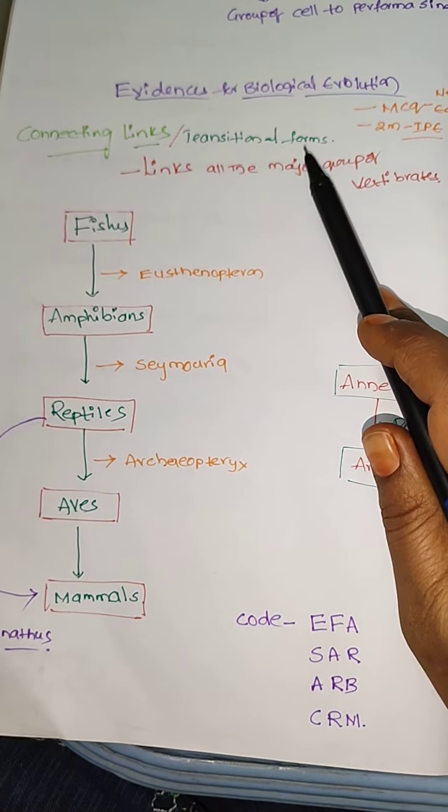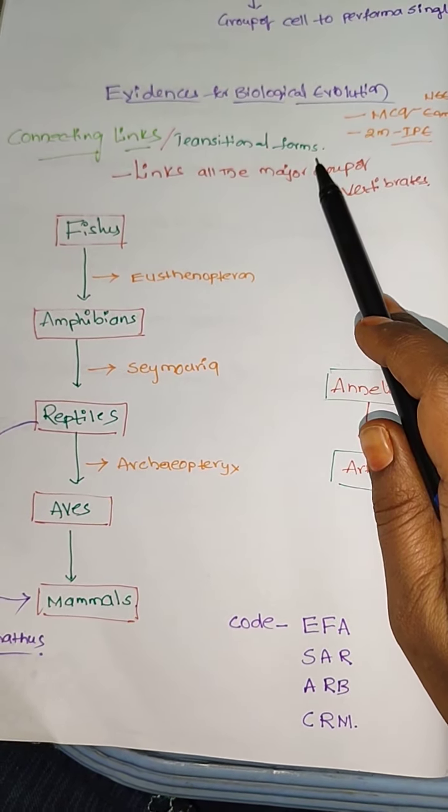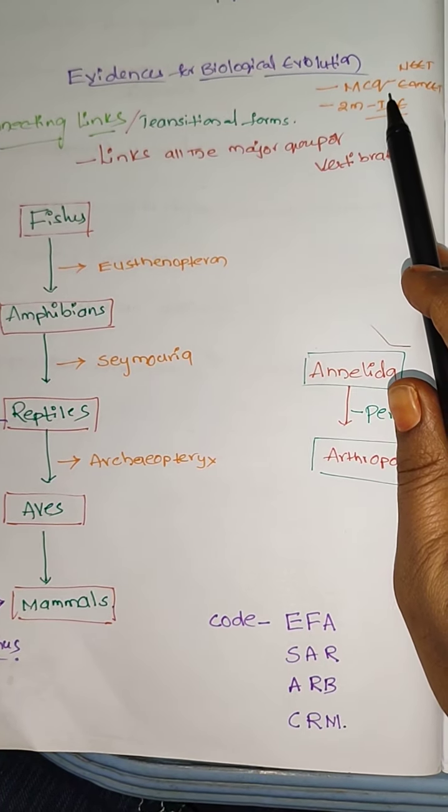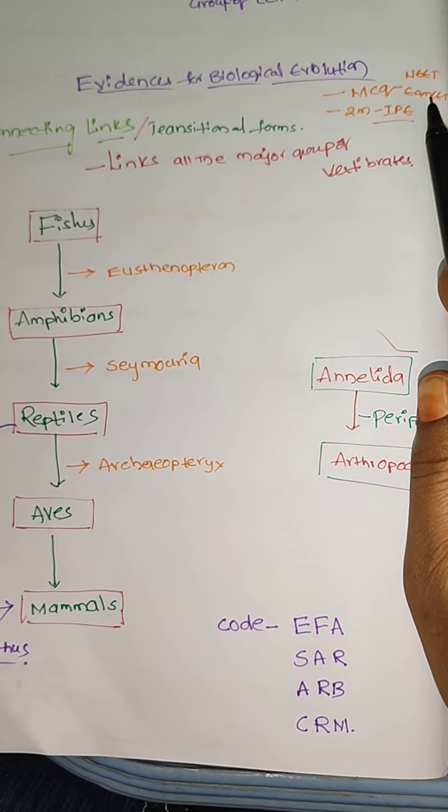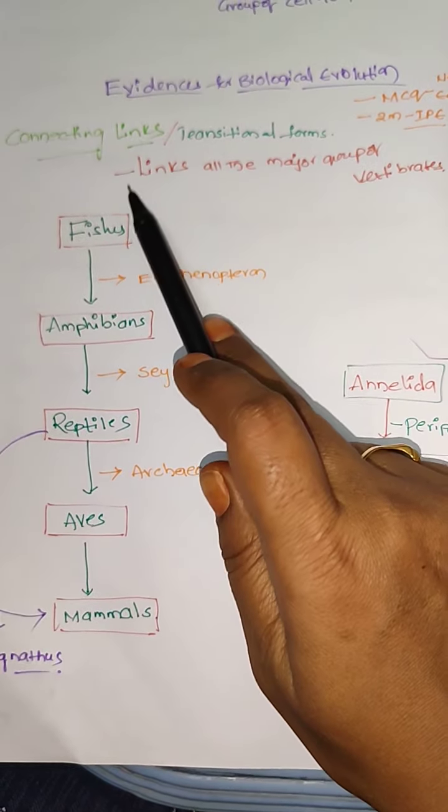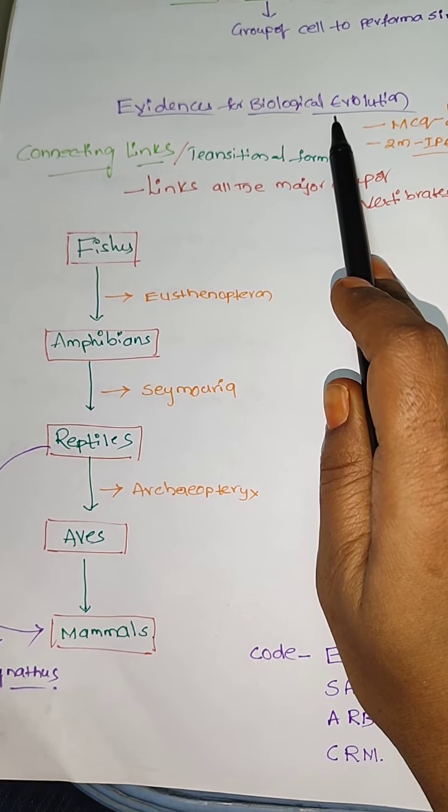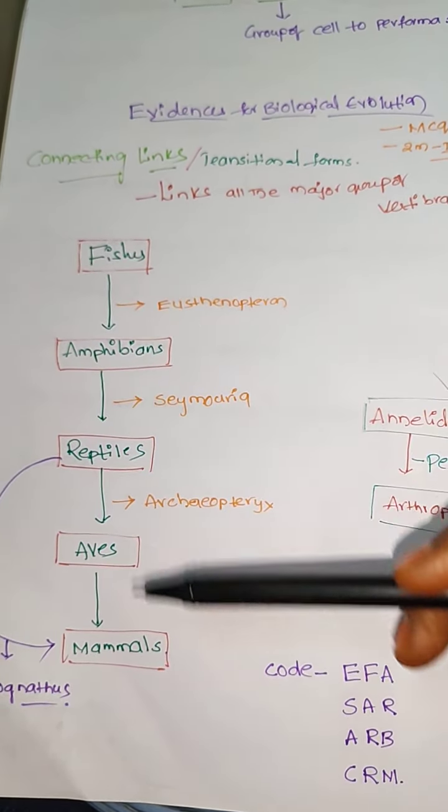Connecting links. This is the topic of evolution, secondary geology. Connecting links important for two marks IPE and important for NEET and MZET MCQ. It is in the topic of evidences for biological evolution, means how the organisms are evolved from simple to complex.